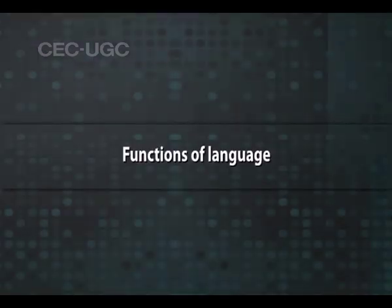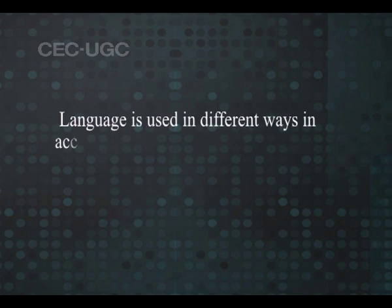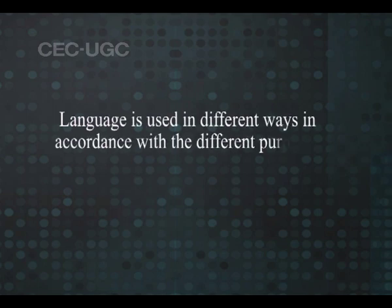Functions of language. There is nothing more subtle than language, and nothing has as many different uses. Language is often spoken of as a tool because it is used to perform the function of letting other people know our thoughts, ideas and emotions. Language is used in different ways in accordance with the different purposes to be served. Some of the functions of language are as follows.